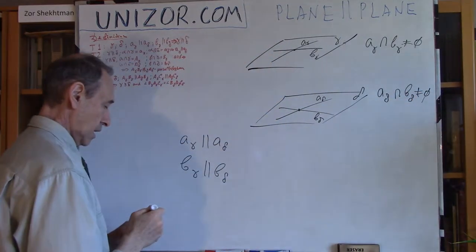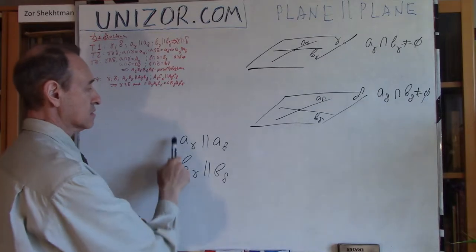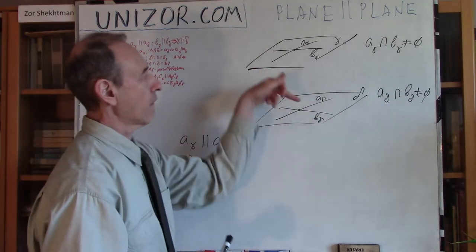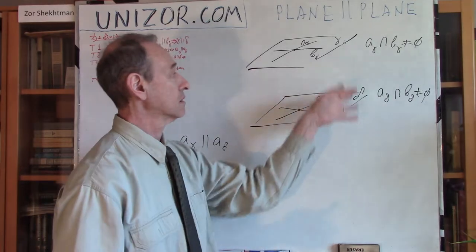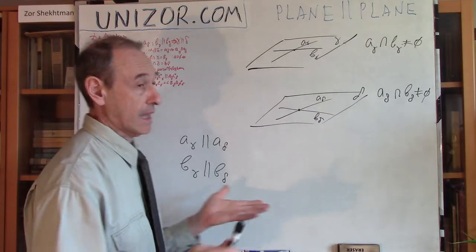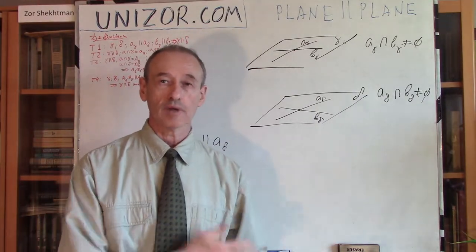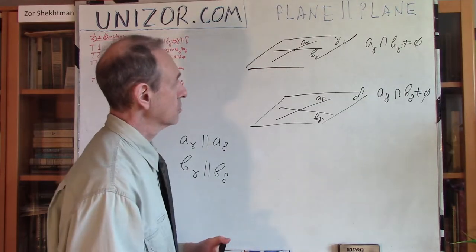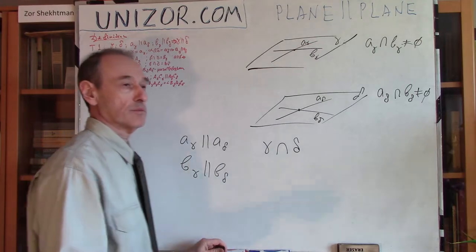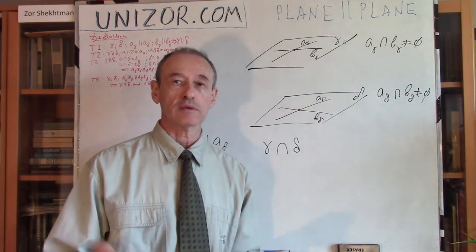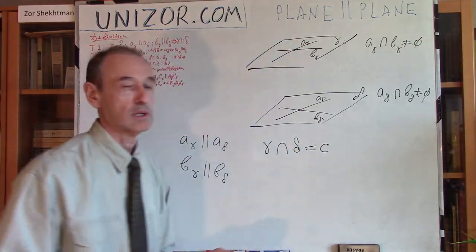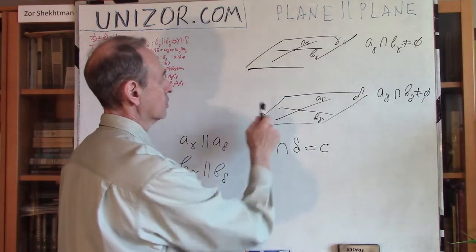Based on these two conditions — the parallelism of the corresponding lines and the lines intersecting — I would like to prove that the planes are parallel, meaning gamma and delta have no common points. As in many cases, we assume the opposite and find a contradiction. So let's assume that gamma and delta do intersect somewhere. One of the axioms says that if two planes intersect at some point, they intersect along a whole straight line. Let's call this line C, which is the intersection of these two planes.